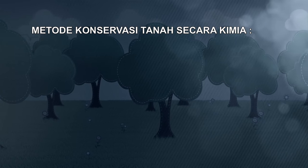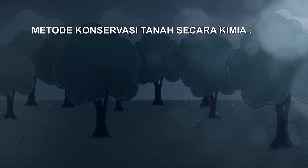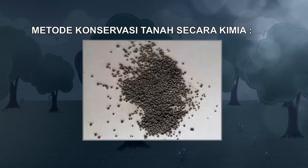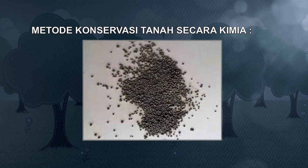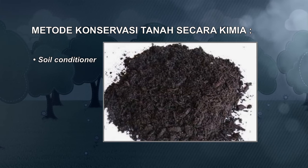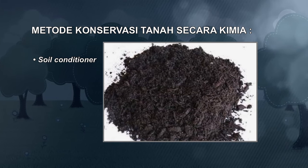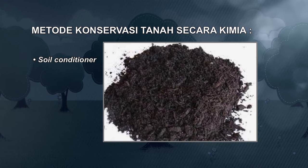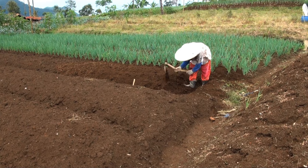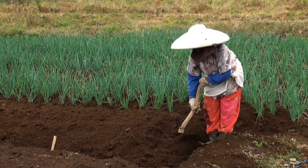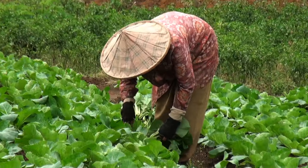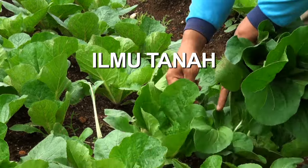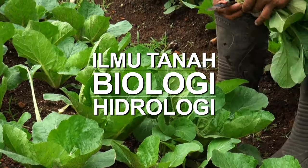Metode konservasi tanah secara kimia dilakukan dengan penggunaan preparat kimia sintetis atau alami yang fungsinya memantapkan agregat dan ruang pori tanah. Teknik konservasi tanah secara kimia dilakukan dengan memberi bahan kimia yang disebut pemantap tanah atau soil conditioning. Persoalan konservasi tanah memerlukan kerjasama yang erat antara berbagai disiplin ilmu pengetahuan seperti ilmu tanah, biologi, hidrologi, dan sebagainya.